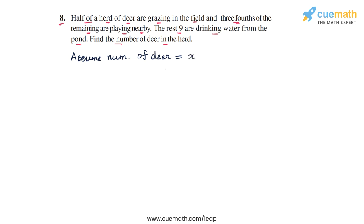Now what we will do is write the number of deer in each group in terms of x. We have some deer who are grazing, some deer who are playing, and some deer who are drinking water.